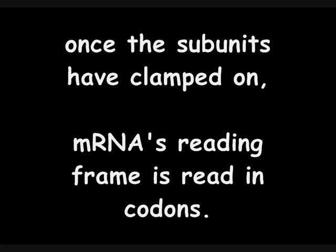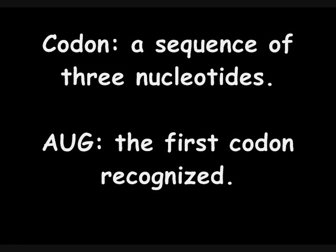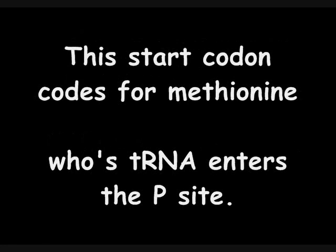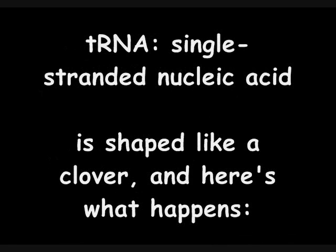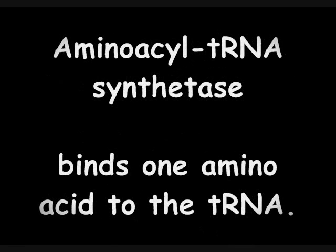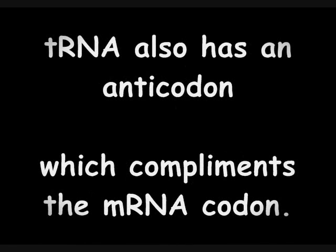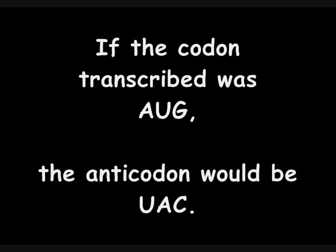Once the subunits have clamped on, the mRNA reading frame is read in codons — a codon being a sequence of three nucleotides. AUG is the first codon recognized; this start codon codes for methionine, whose tRNA enters the P site. tRNA is a single-stranded nucleic acid shaped like a cloverleaf. Aminoacyl-tRNA synthetase binds one amino acid to the tRNA. tRNA also has an anticodon which complements the mRNA codon — if the codon was AUG, the anticodon would be UAC.